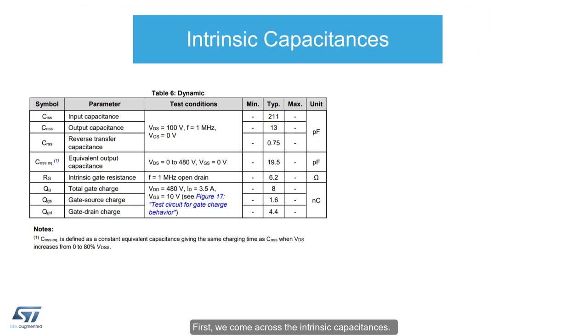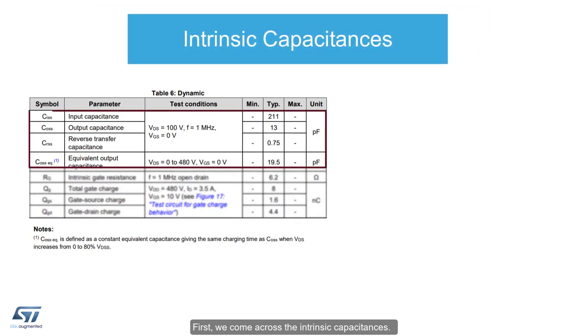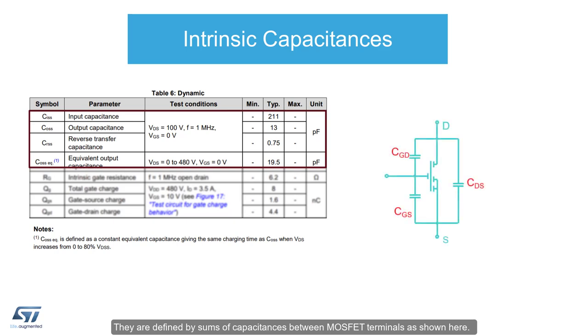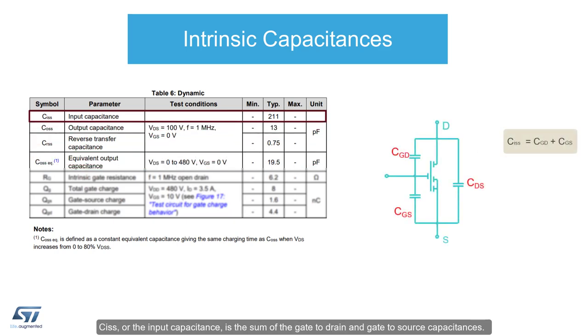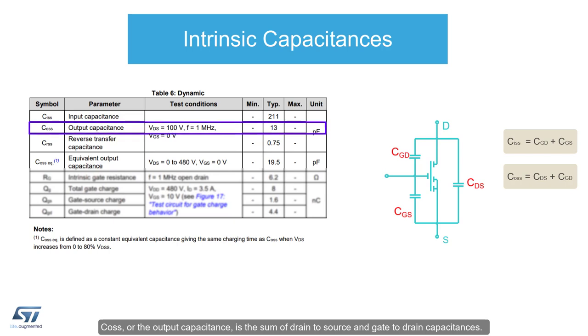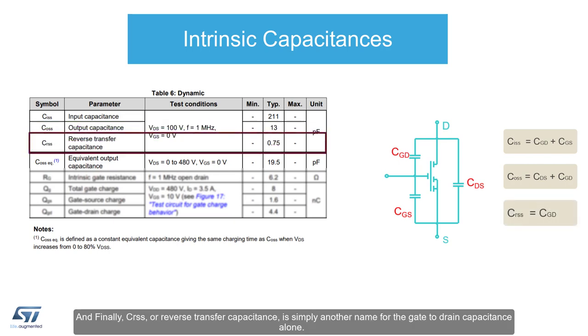Next, we come across the intrinsic capacitances. They are defined by sums of capacitances between MOSFET terminals as shown here. CISS, or the input capacitance, is the sum of the gate-to-drain and gate-to-source capacitances. COSS, or the output capacitance, is the sum of drain-to-source and gate-to-drain capacitances. And finally, CRSS, or reverse transfer capacitance, is simply another name for the gate-to-drain capacitance alone.